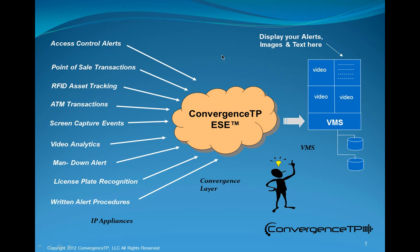Before we begin the live LPR demonstration, let me first go through a couple slides which better explain where the Convergence TP product fits within the customer enterprise. On the left-hand side of the screen you'll see a number of IP appliances which Convergence TP supports. In the center of the screen is the Convergence TP event streaming engine. This patent-pending technology takes the wide range of IP packet protocols presented by these IP appliances and creates one homogeneous database which it then presents to the VMS system.